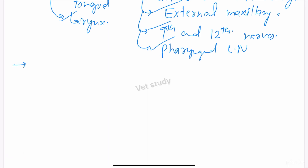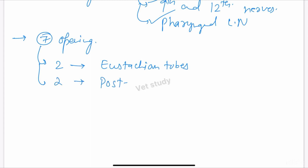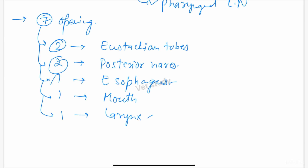One major important question is about the seven openings through which the cavity of the pharynx communicates with other structures. Two openings are for the eustachian tubes, two openings are for the posterior nares, one opening is for the esophagus, one opening is for the mouth, and one opening is for the larynx.